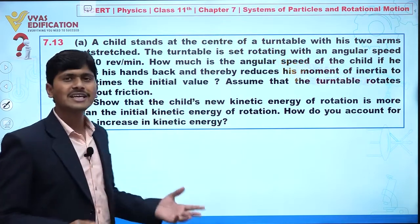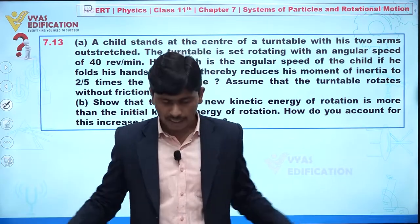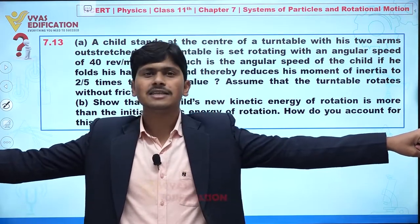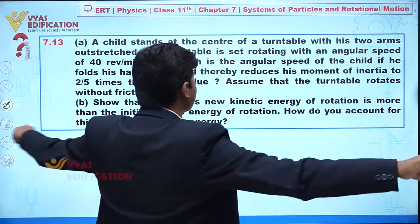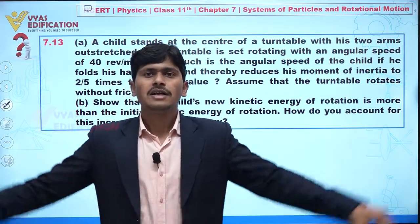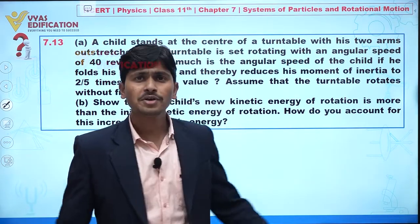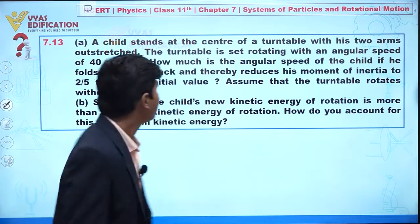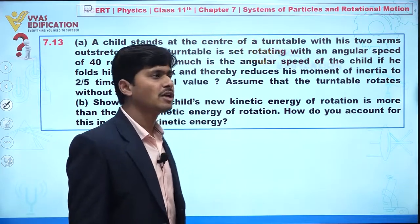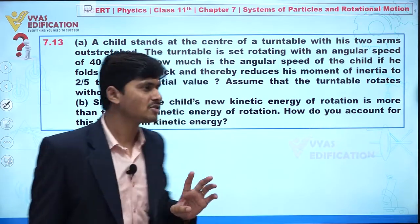Assume the turntable rotates without any friction. Let's understand this question: suppose we have a turntable and I am the child with my hands outstretched, and the turntable is rotating. Now suppose I fold my hands — at that point the moment of inertia in the second case becomes two-fifths of its initial value. We have to find at what angular velocity I am rotating on the turntable.